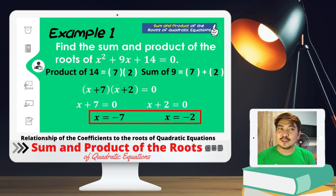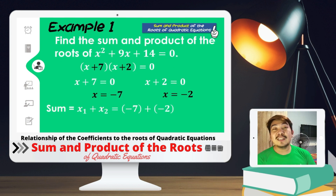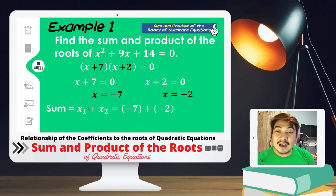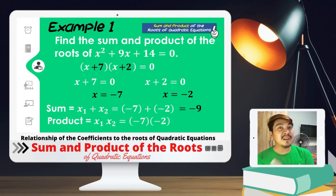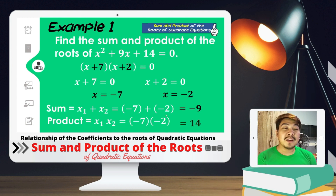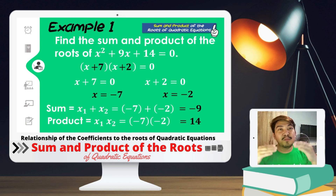Now that we have the solutions or roots of the quadratic equation, we can get the sum and product. For the sum, we add the roots: x₁ + x₂ = (-7) + (-2) = -9. For the product, we multiply: x₁ × x₂ = (-7) × (-2) = +14. However, this is the long method — we solved the equation first to get the roots, then computed the sum and product.